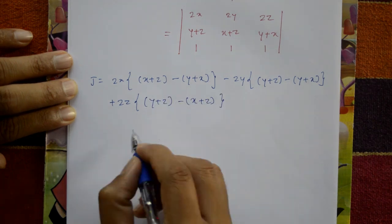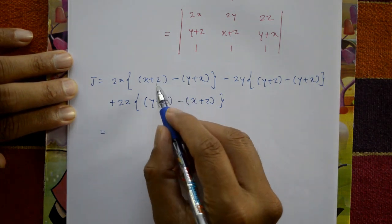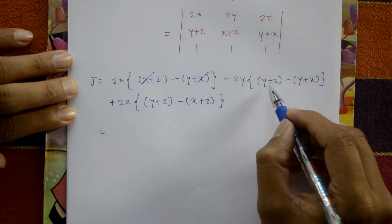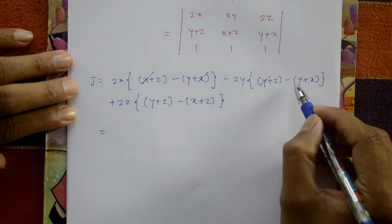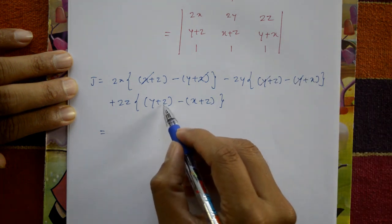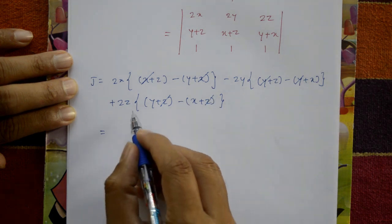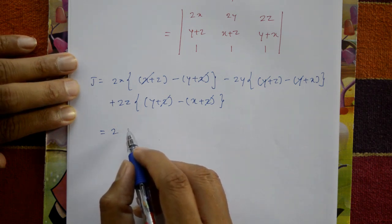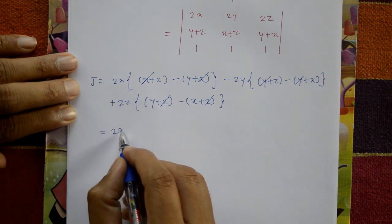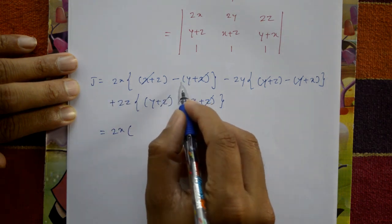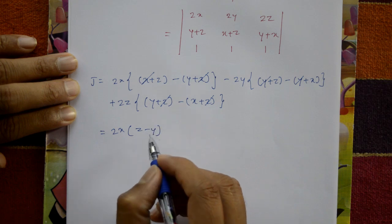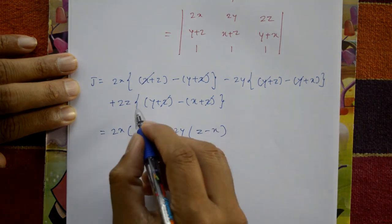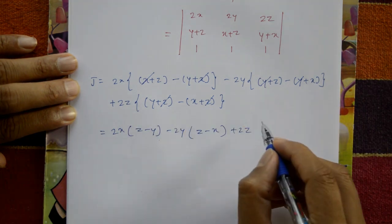The last term plus 2z into cross multiplication (y+z) minus (x+z). And this equals: plus x minus x gets cancelled, plus y minus y gets cancelled, plus z minus z gets cancelled. Taking 2 as common outside — first: 2x times (z minus y).